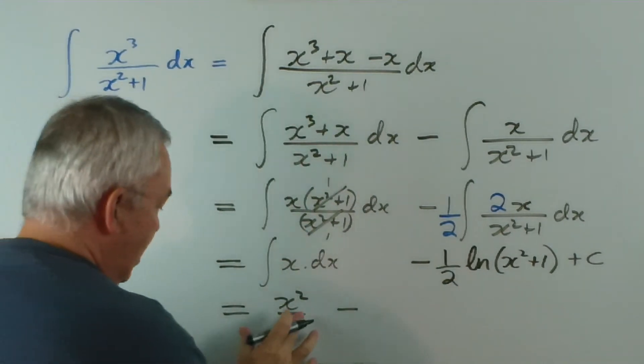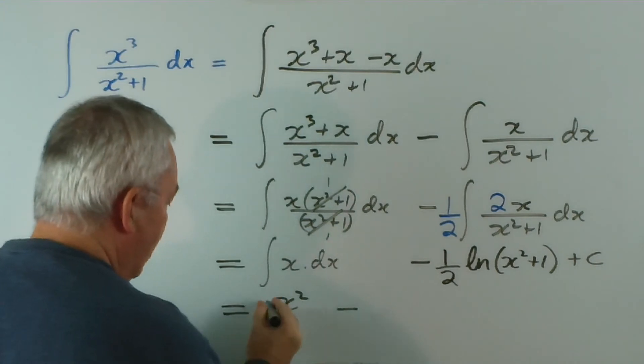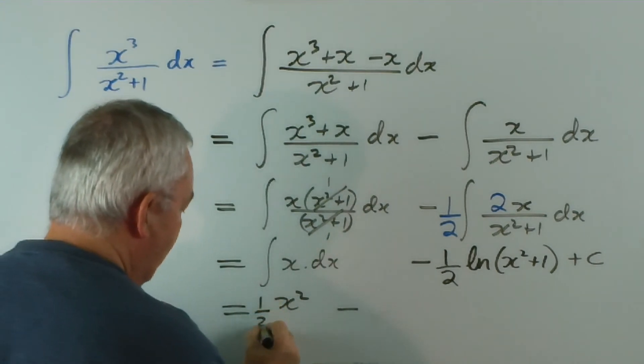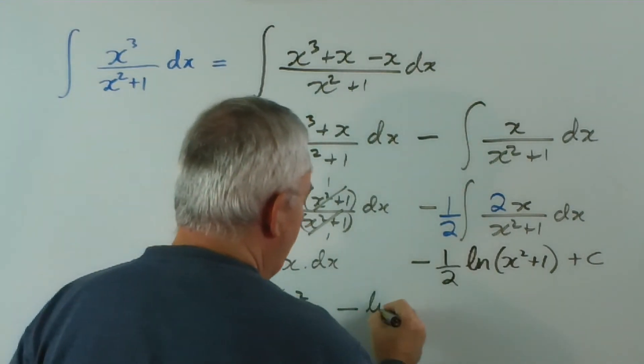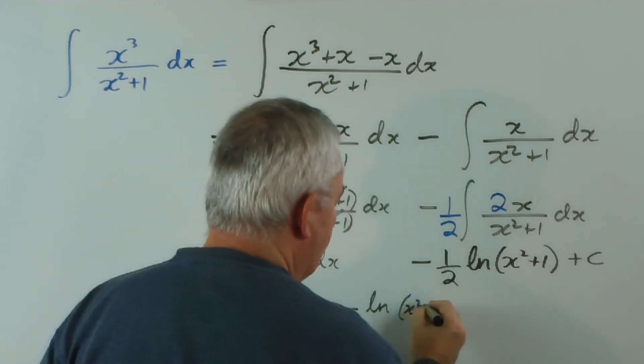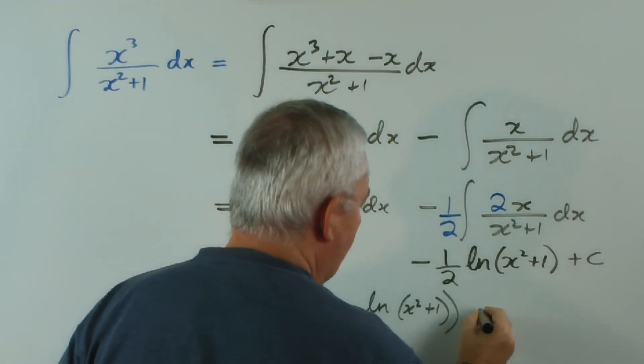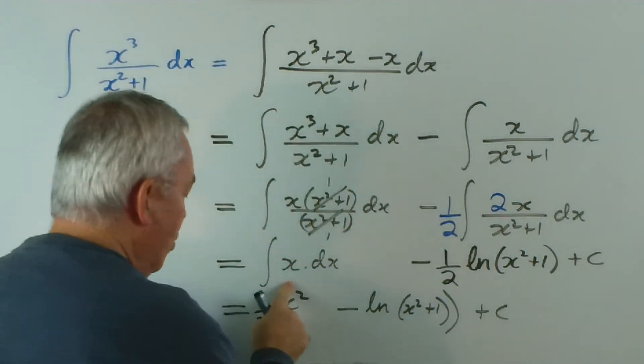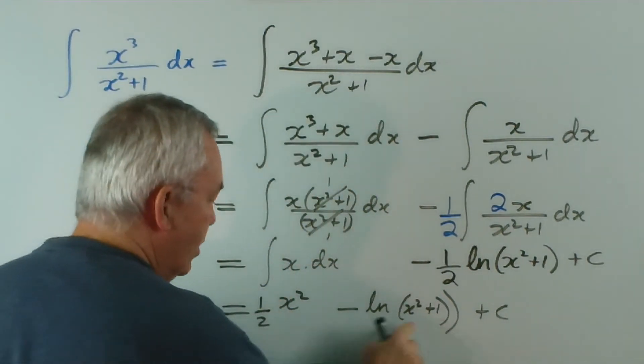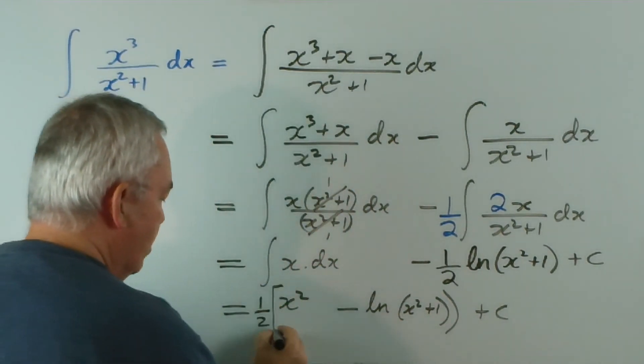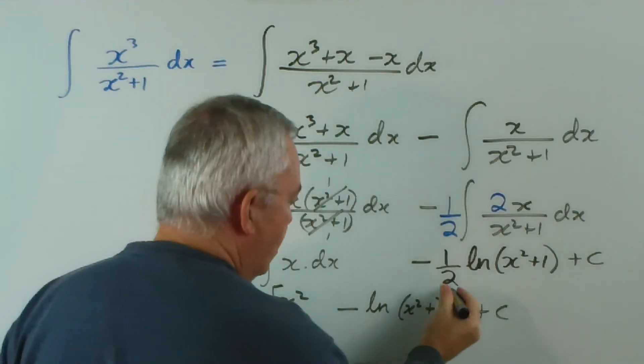So a half outside of x squared minus log x squared plus 1 plus c. More properly, since we've used parentheses here, we should use brackets around this expression.